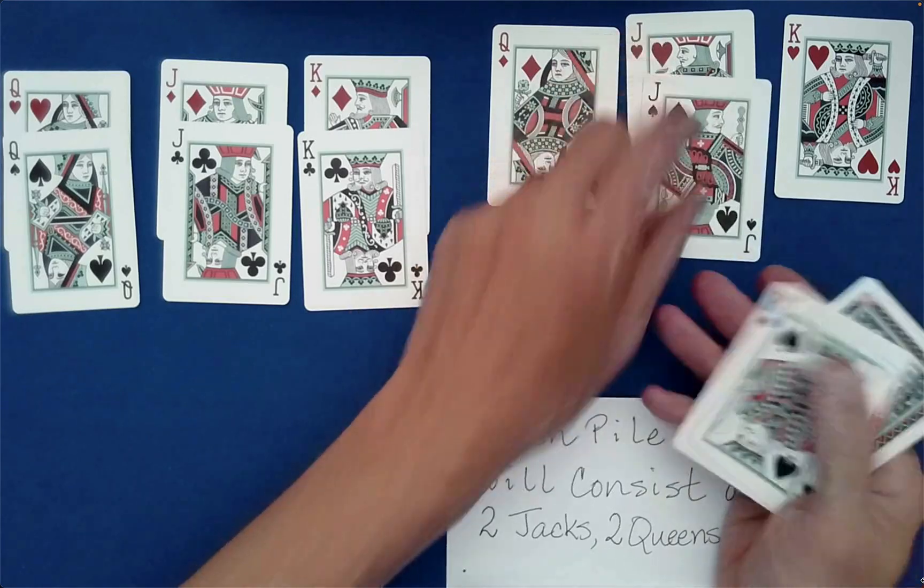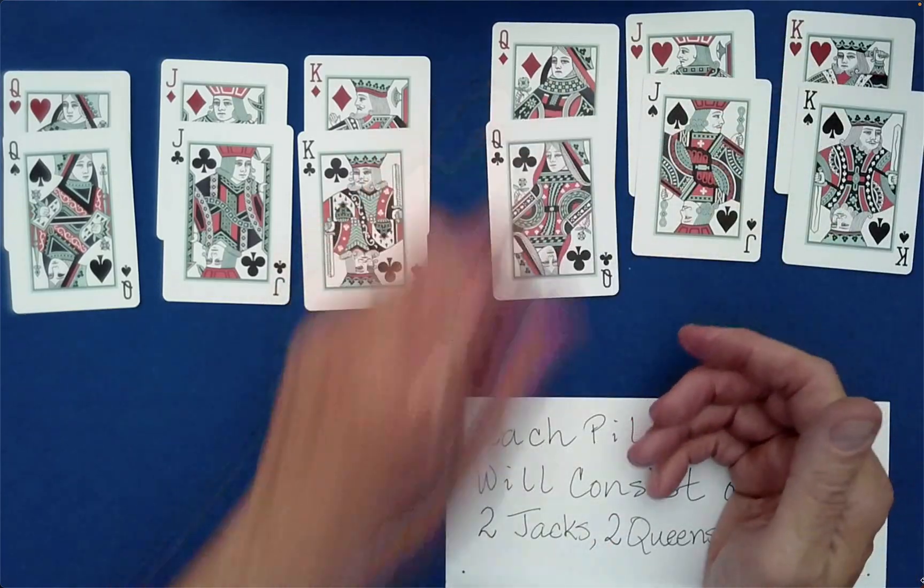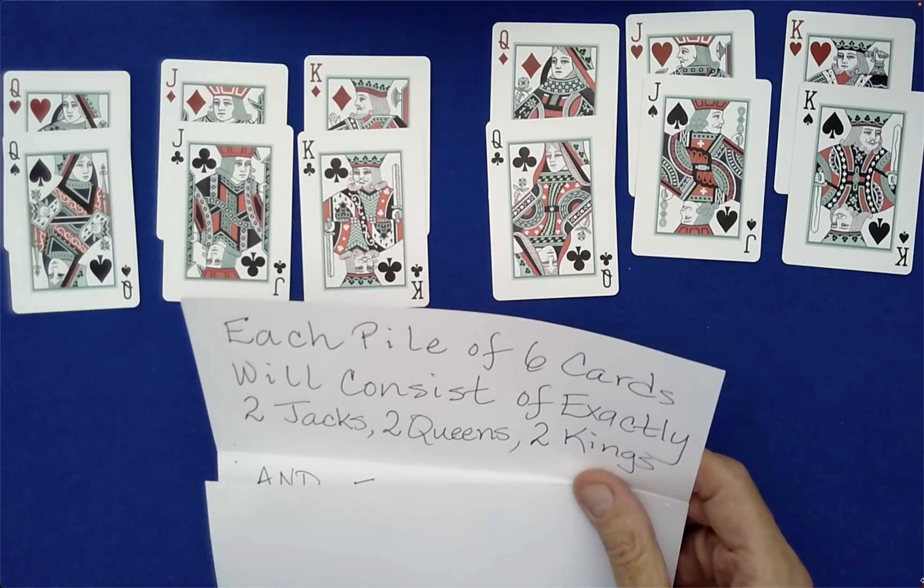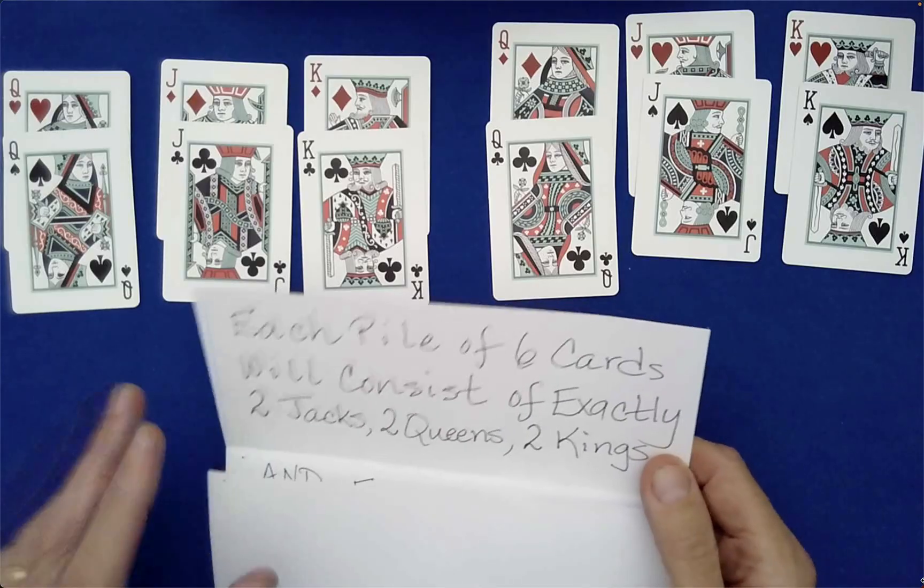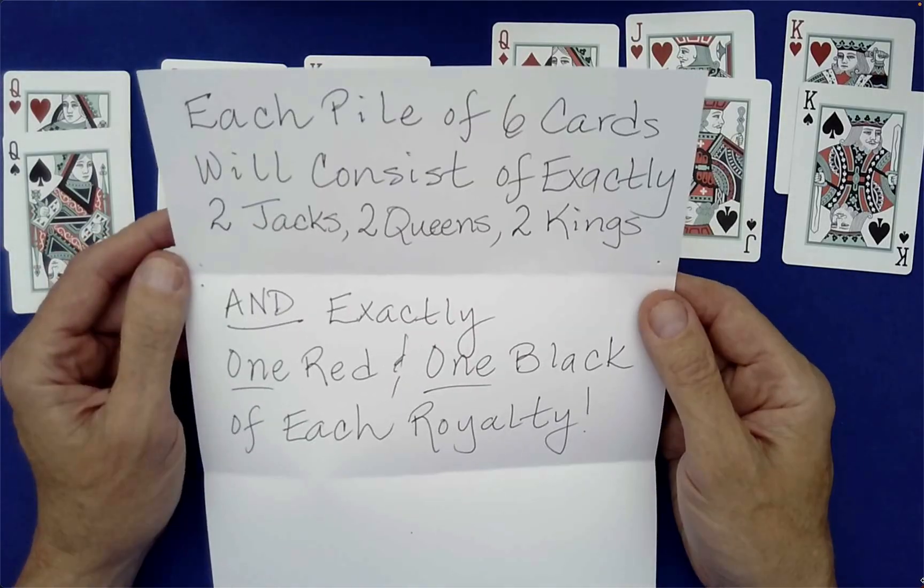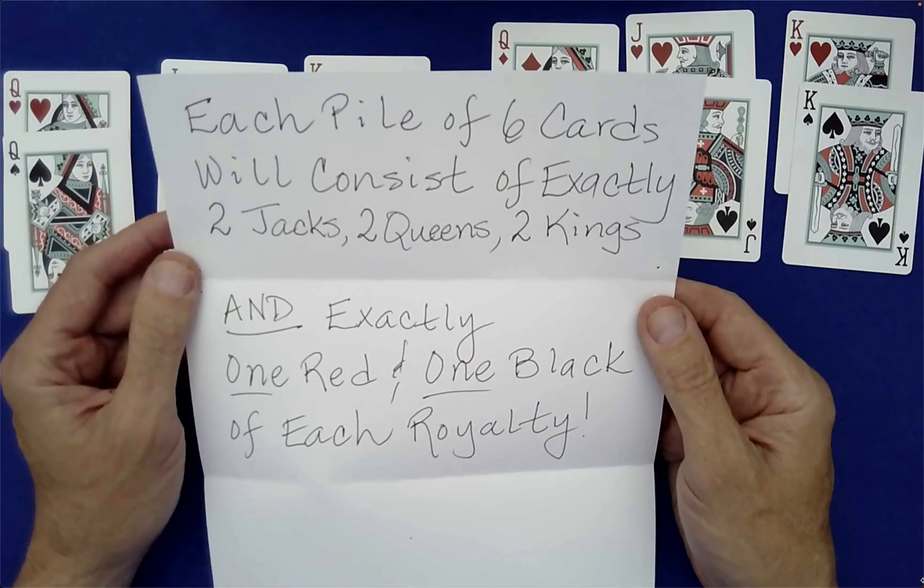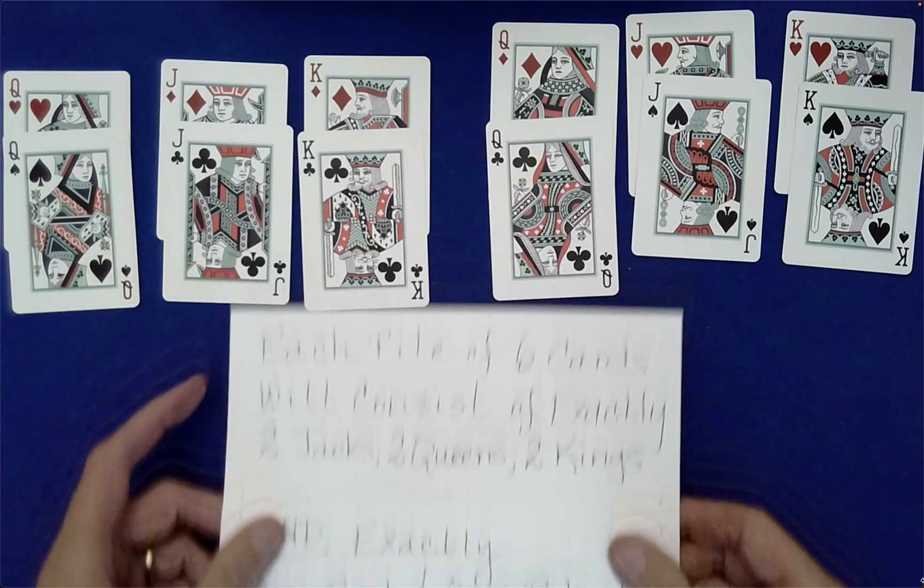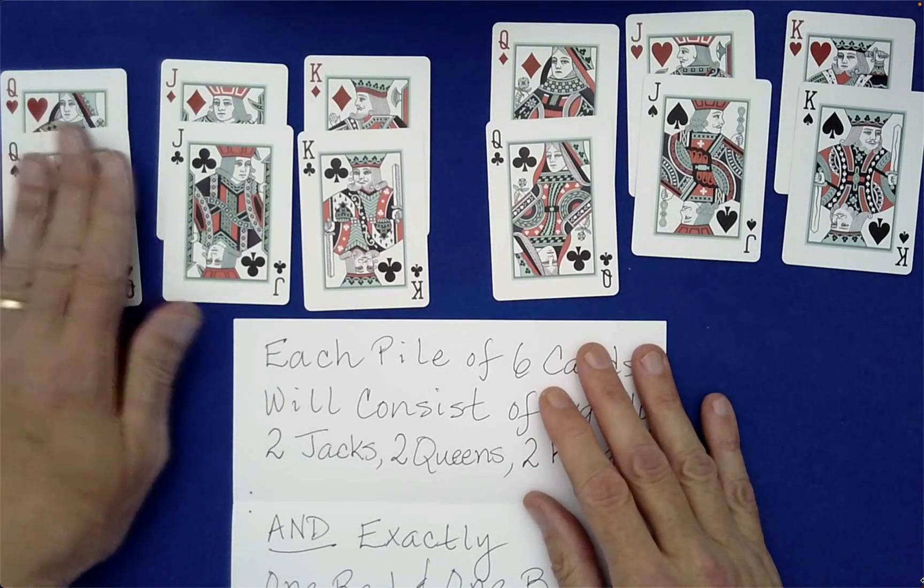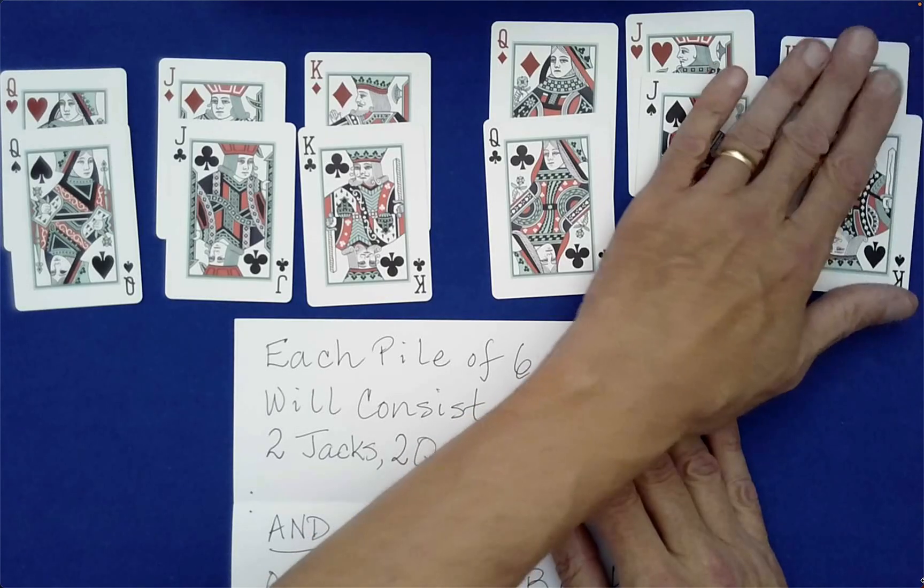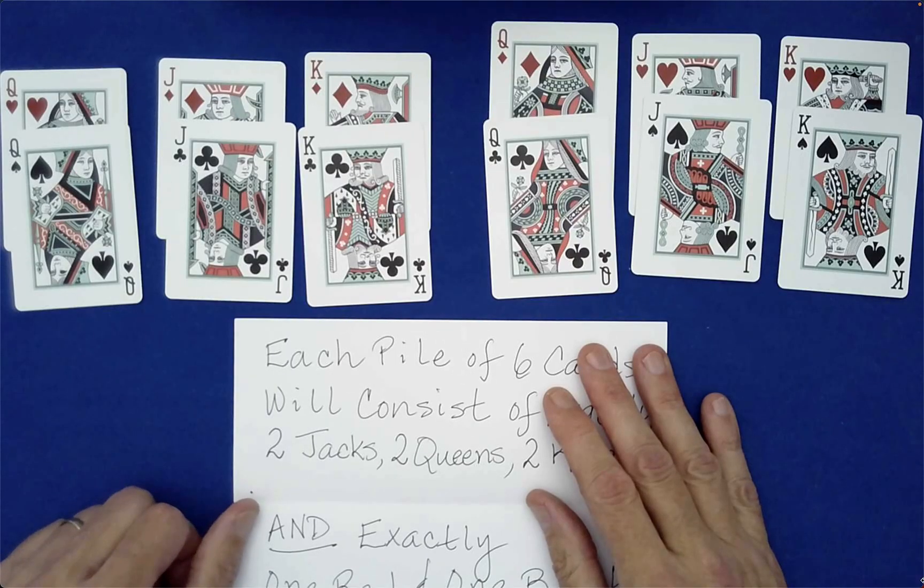With the choices that you made along the way as well - check that out, that is amazing and it always works out this way. Oh, and also I always forget there's a second part to the prediction: we'll have exactly one red and one black of each royalty, one of each color. Boy, we are amazing working together.